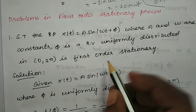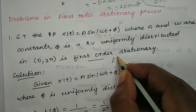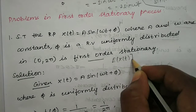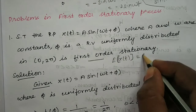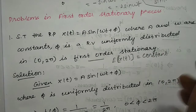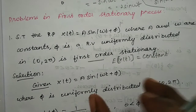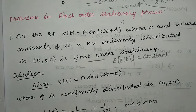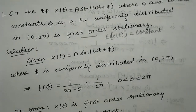For first order stationary, what we need to prove is simple: expectation of x of t equal to constant. We need to prove that E[x(t)] is a constant. If that holds, it is first order stationary.